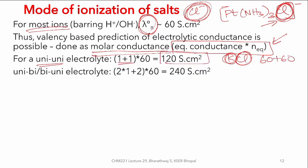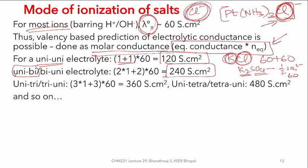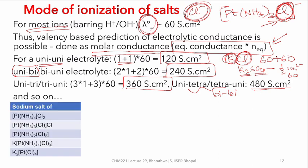For a uni-uni electrolyte like KCl: contribution from K⁺ and Cl⁻ gives (1+1)×60 = 120 S·cm². For a uni-bi or bi-uni electrolyte like K₂SO₄: 2×60 for K⁺ and 1×60 for ½SO₄²⁻ gives 120+120 = 240 S·cm². Similarly, uni-tri electrolytes give about 360 S·cm², uni-tetra and tetra-uni give about 480 S·cm², and bi-bi also gives the same.